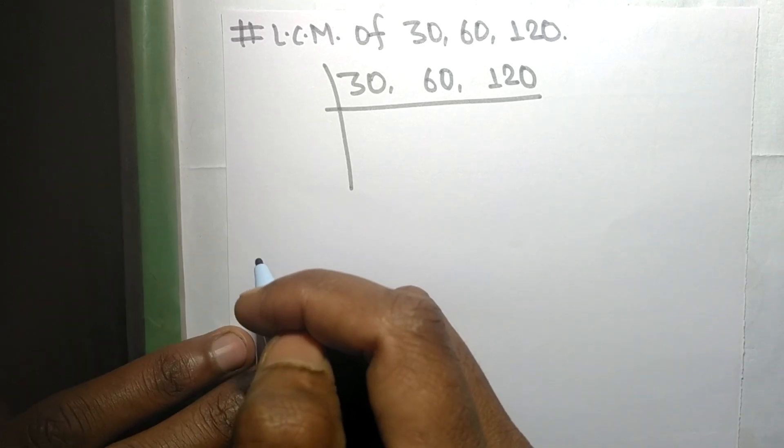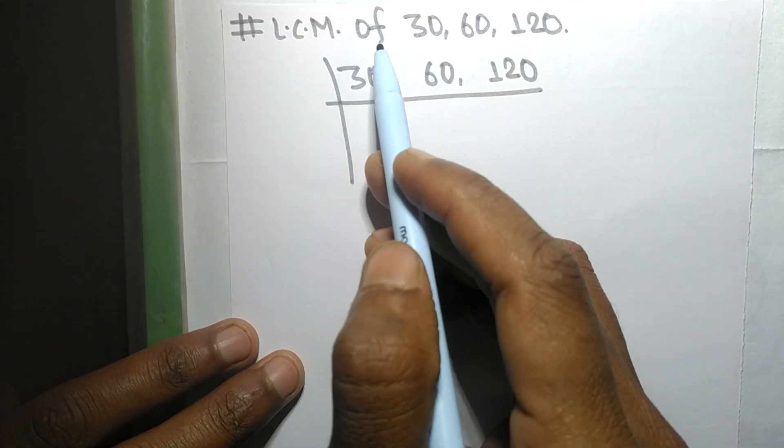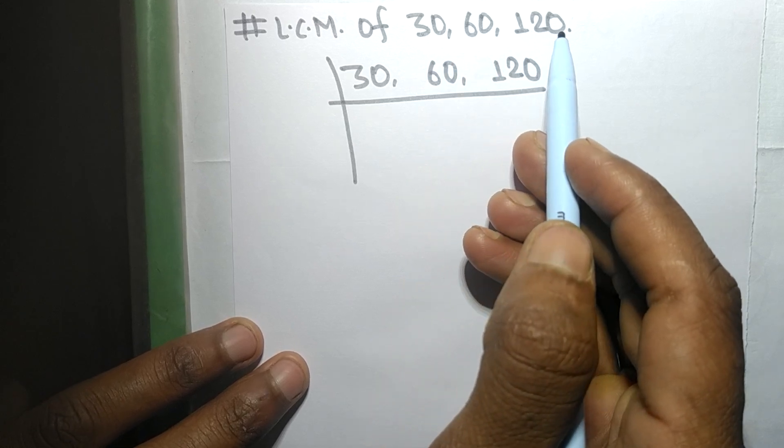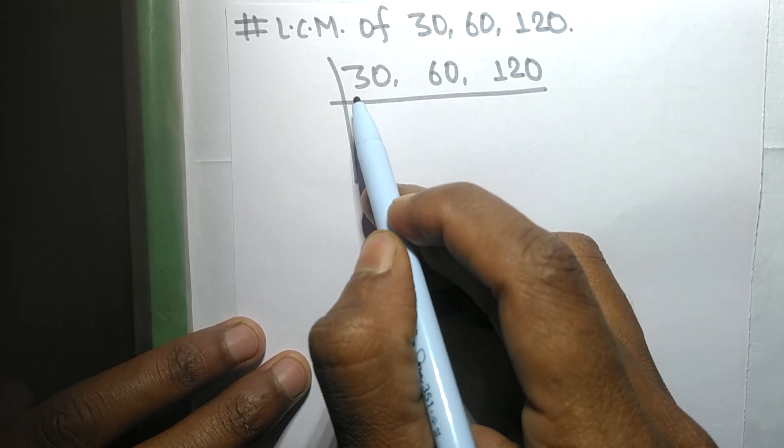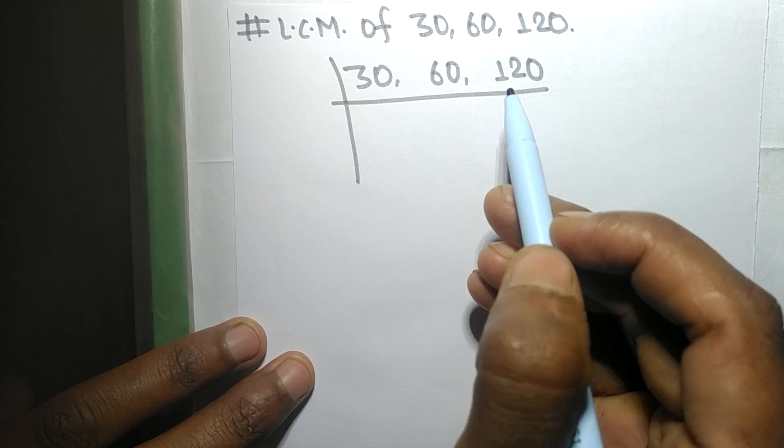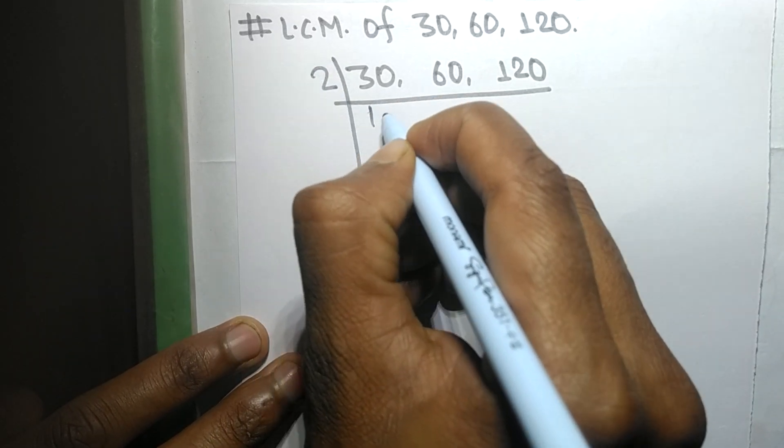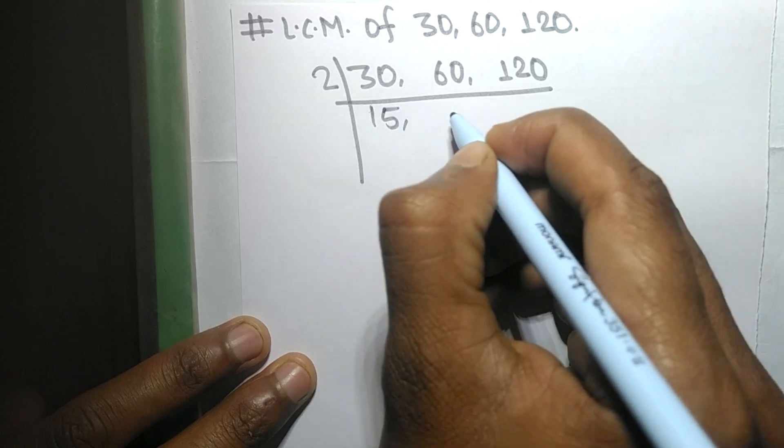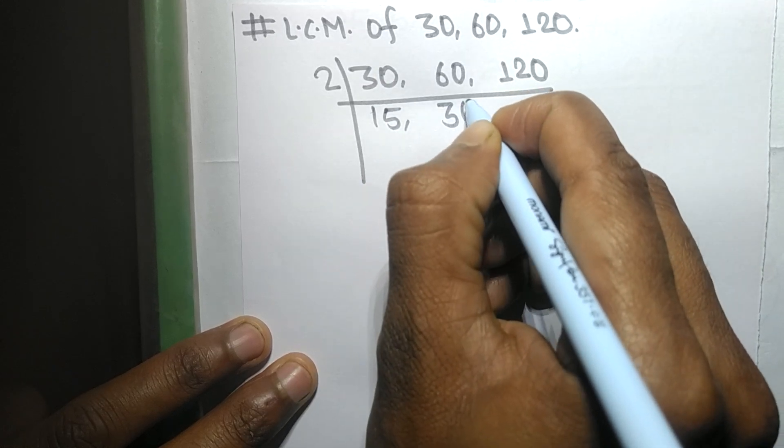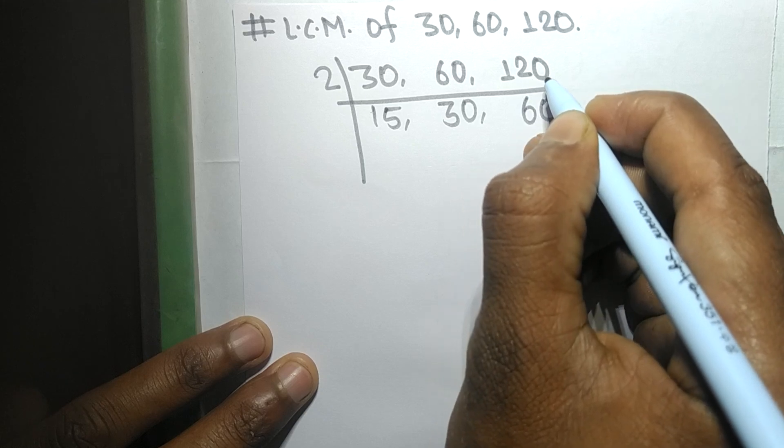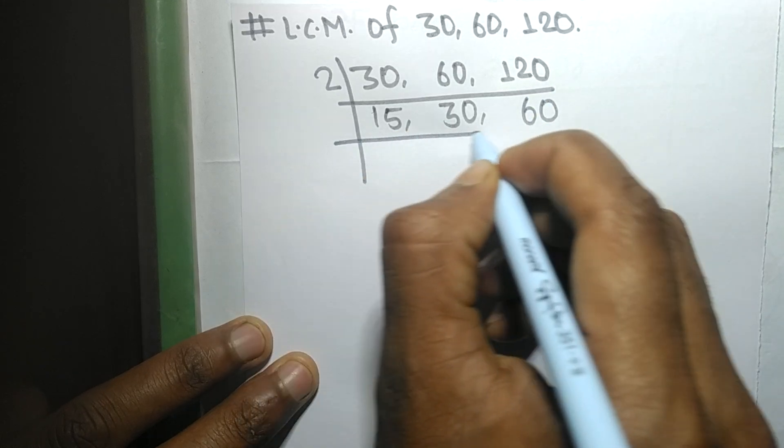Today in this video we shall find LCM of 30, 60, and 120. These all numbers are exactly divisible by 2, so 2 times 15 means 30, 2 times 30 means 60, 2 times 60 means 120.